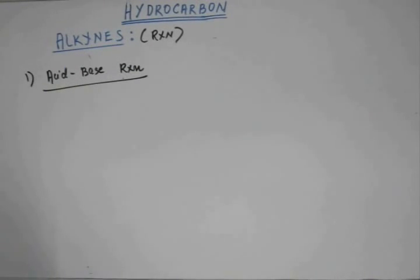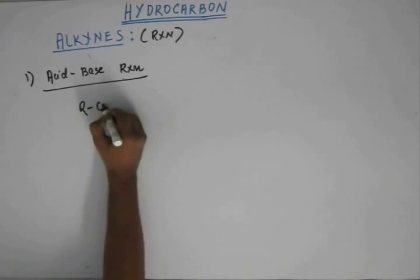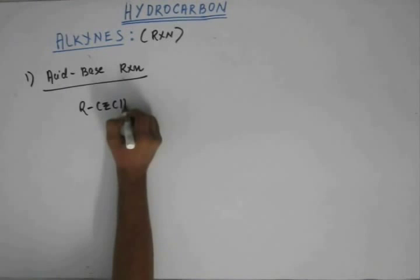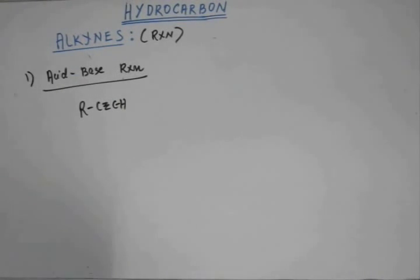Now, as I have already told you, the terminal alkyne—now acid-base—only terminal alkyne can act as an acid because terminal alkyne has a hydrogen on the carbon.